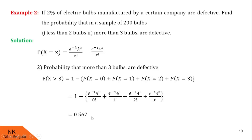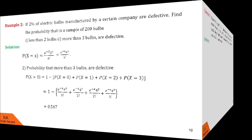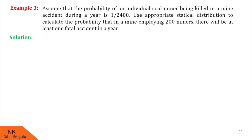So this is the probability that more than 3 bulbs are defective. I hope you understood this answer. Now let's go for the next example. We are given that the probability of an individual coal miner being killed in a mine accident during a year is 1 over 2400. We are asked to use an appropriate statistical distribution to calculate the probability that in a mine employing 200 miners, there will be at least one fatal accident in a year.